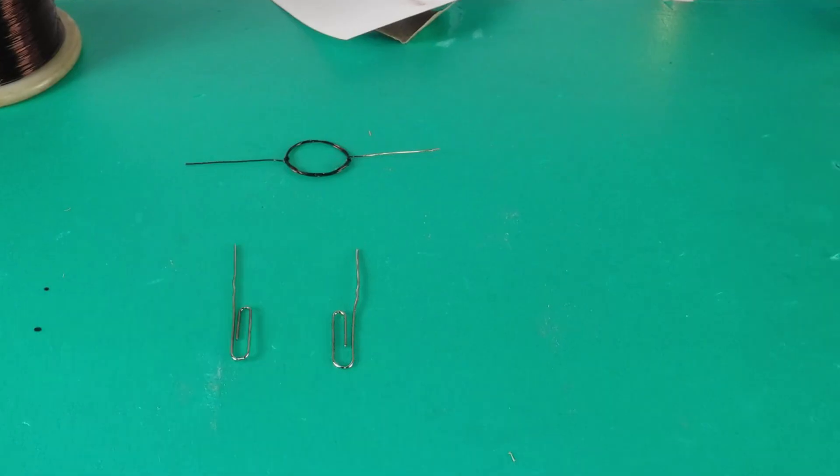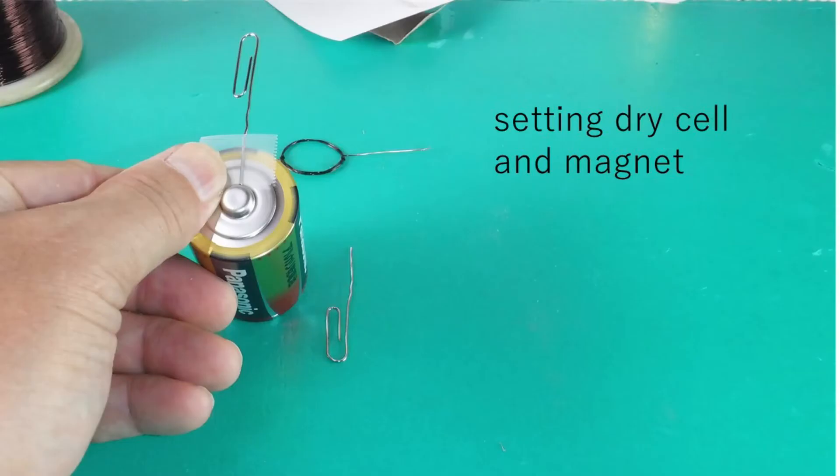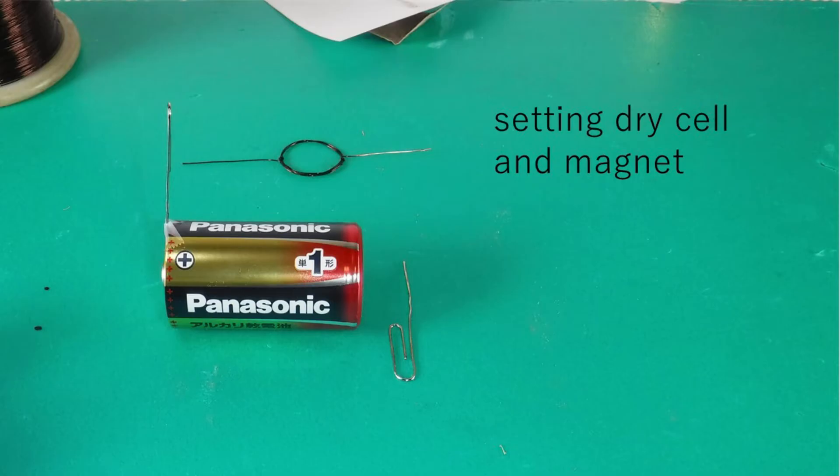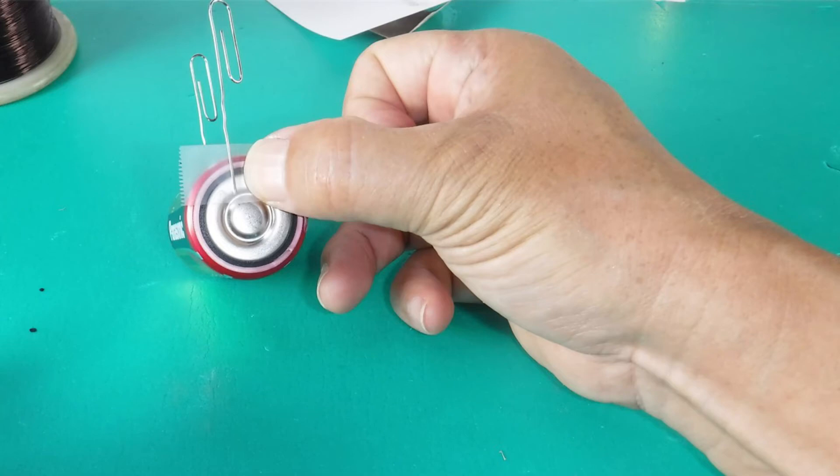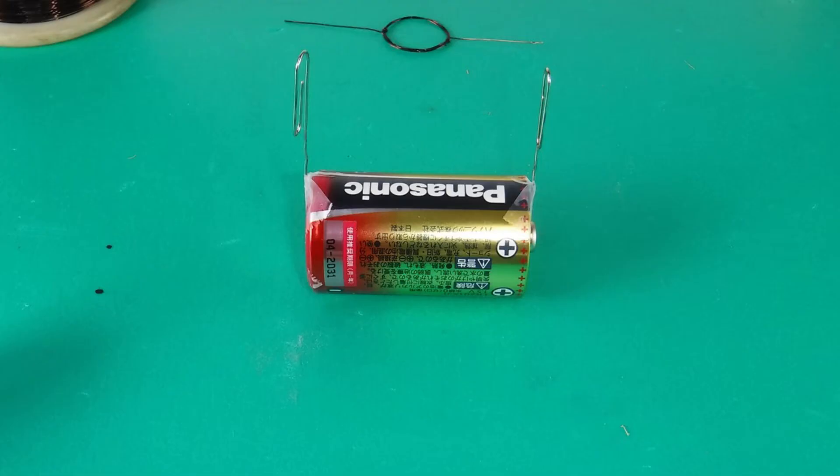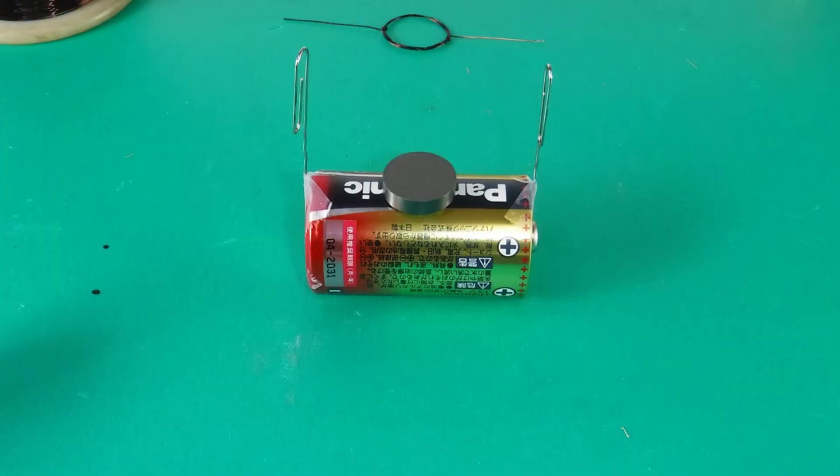Make a coil support with paper clip. Attach support on both sides of a dry cell. Put a magnet on a dry cell.